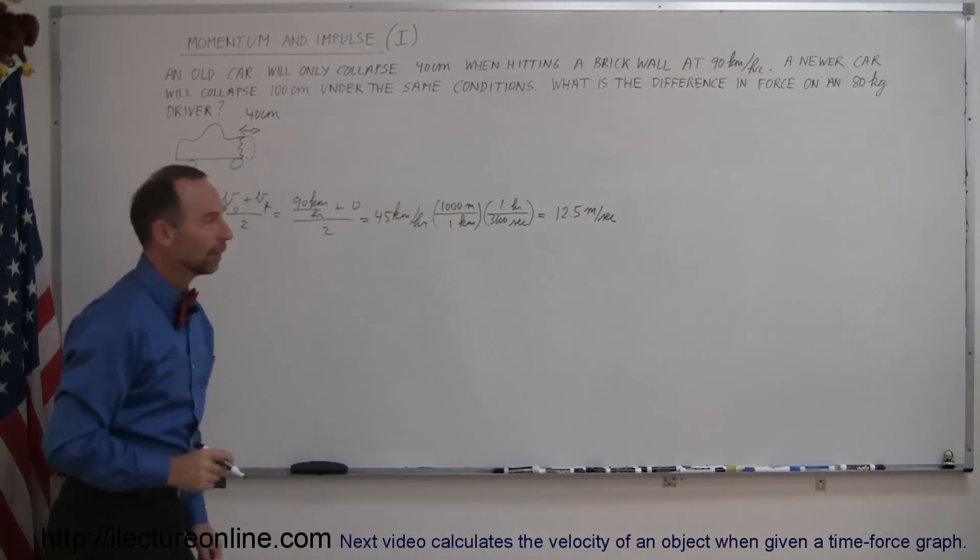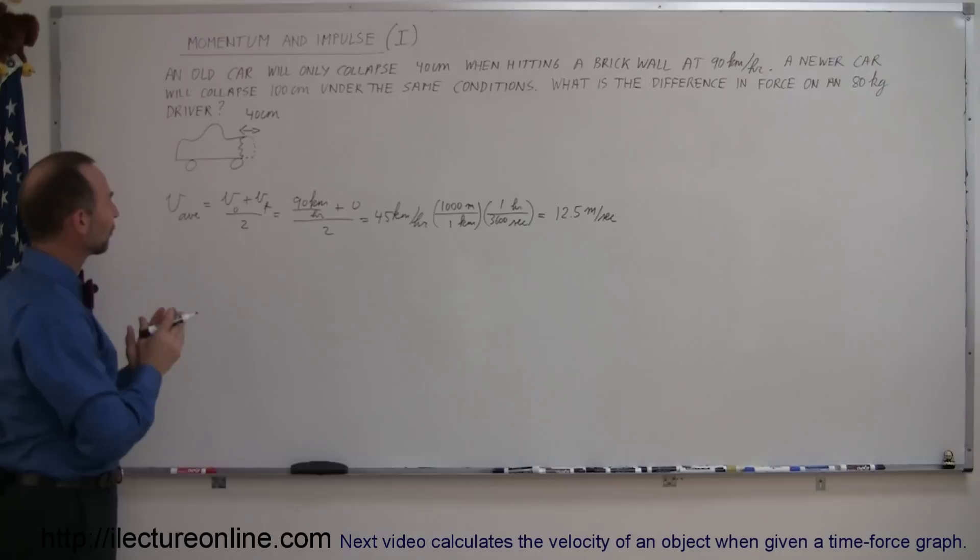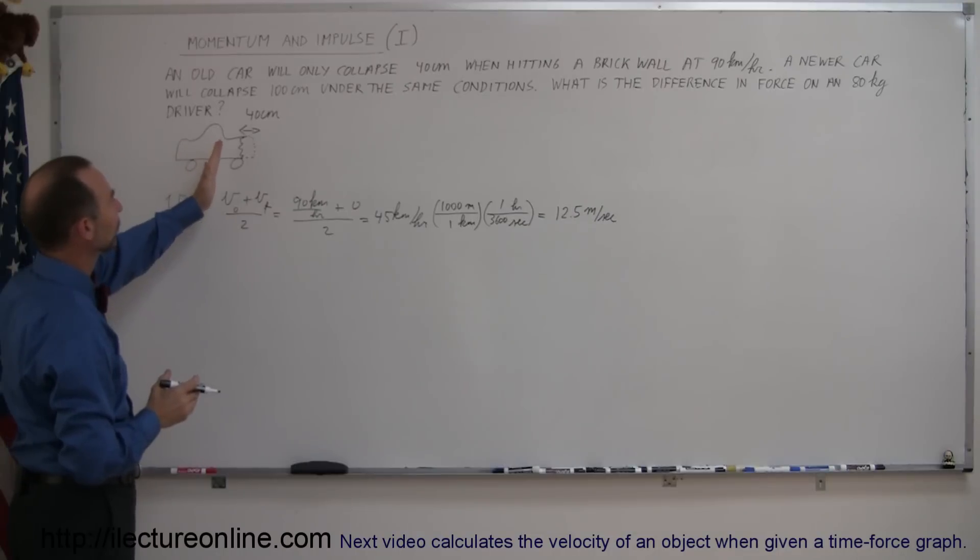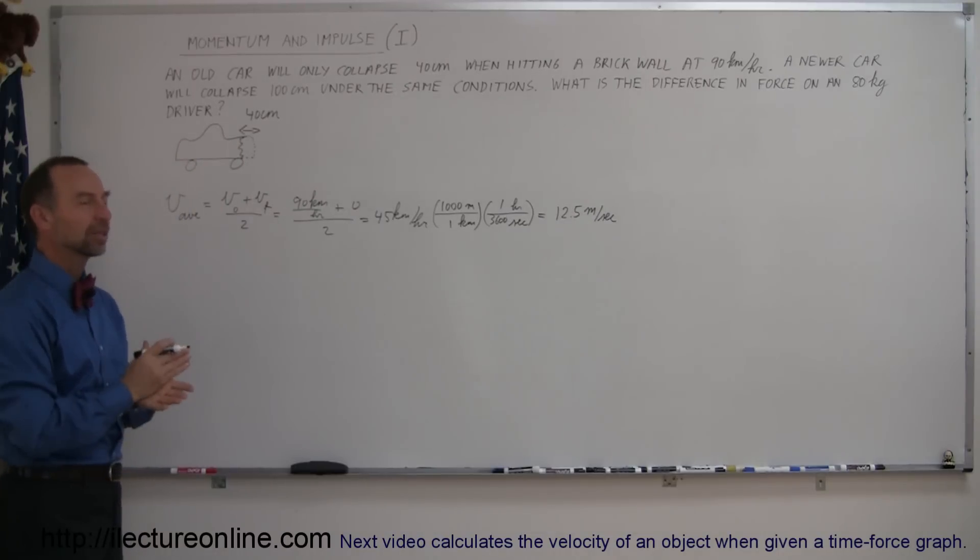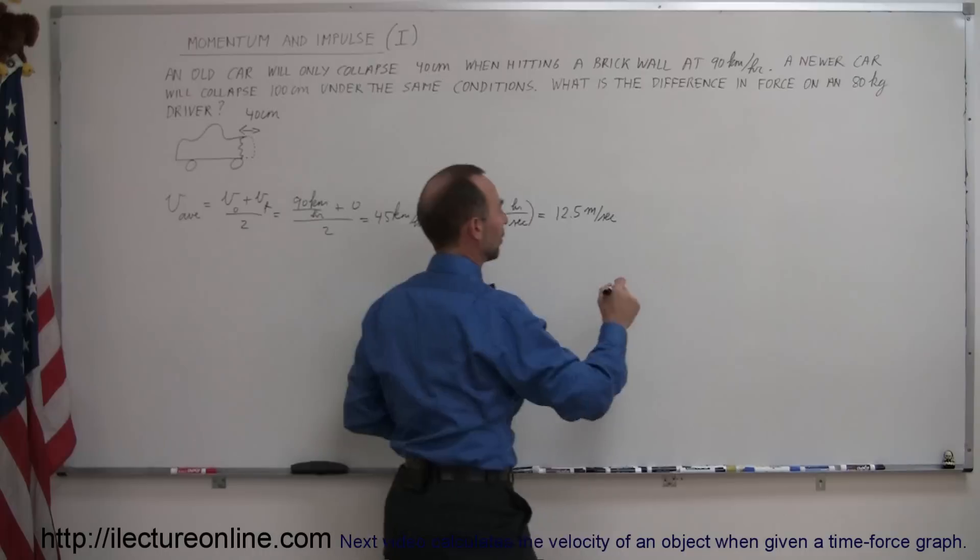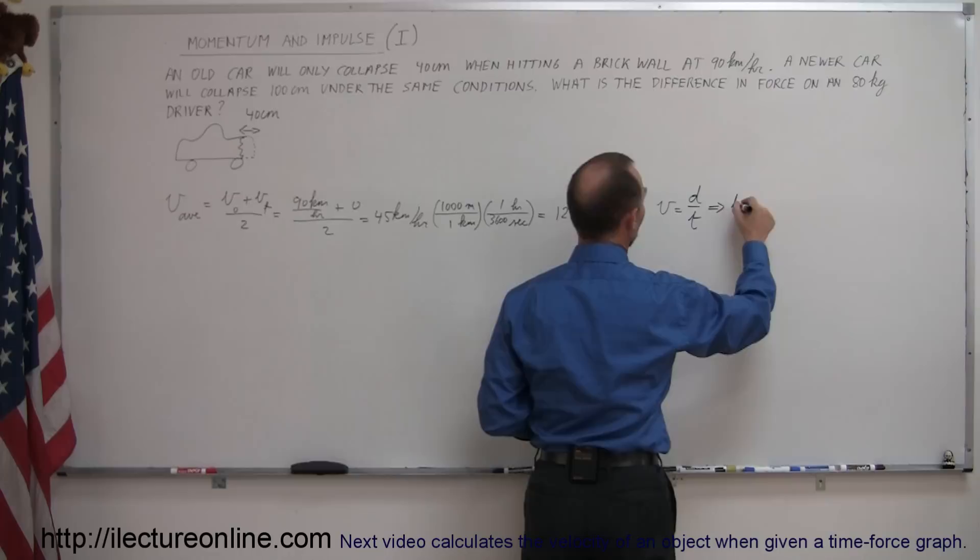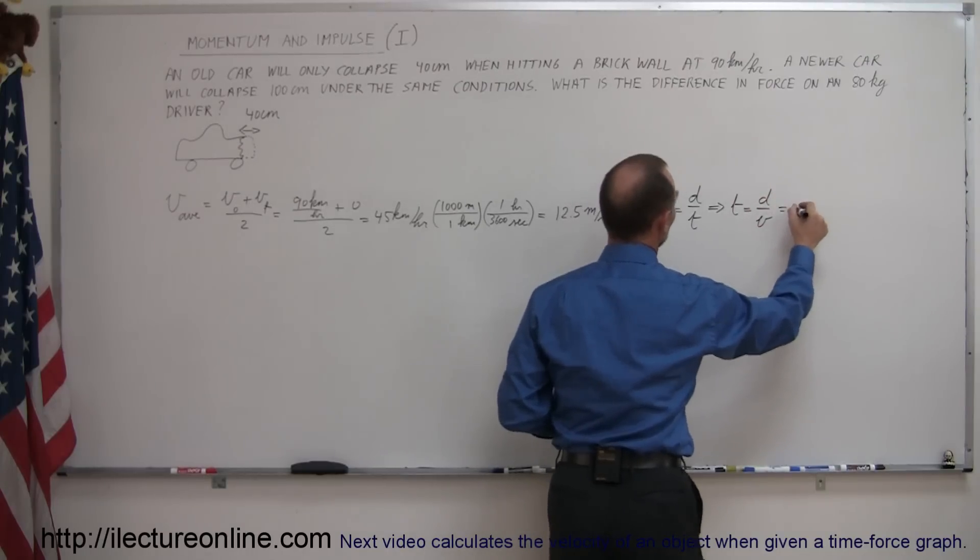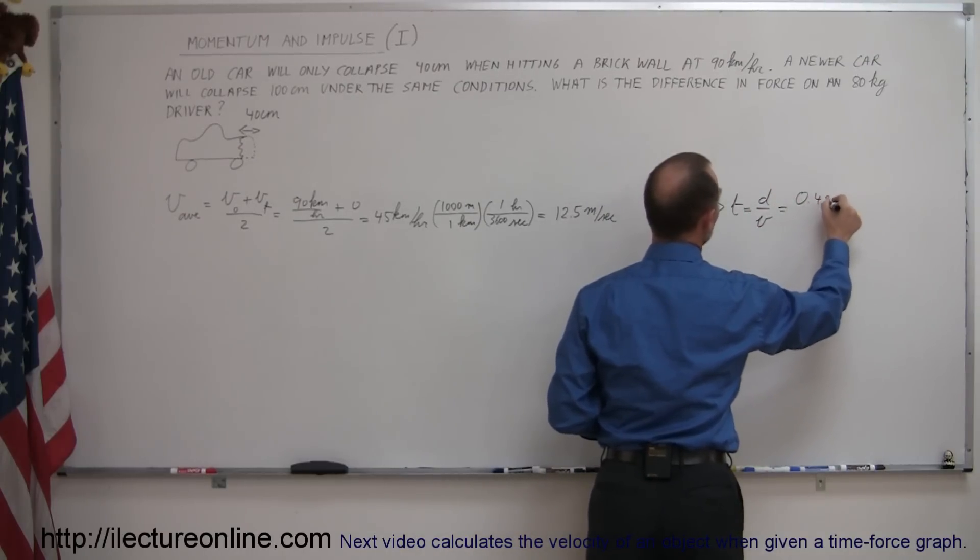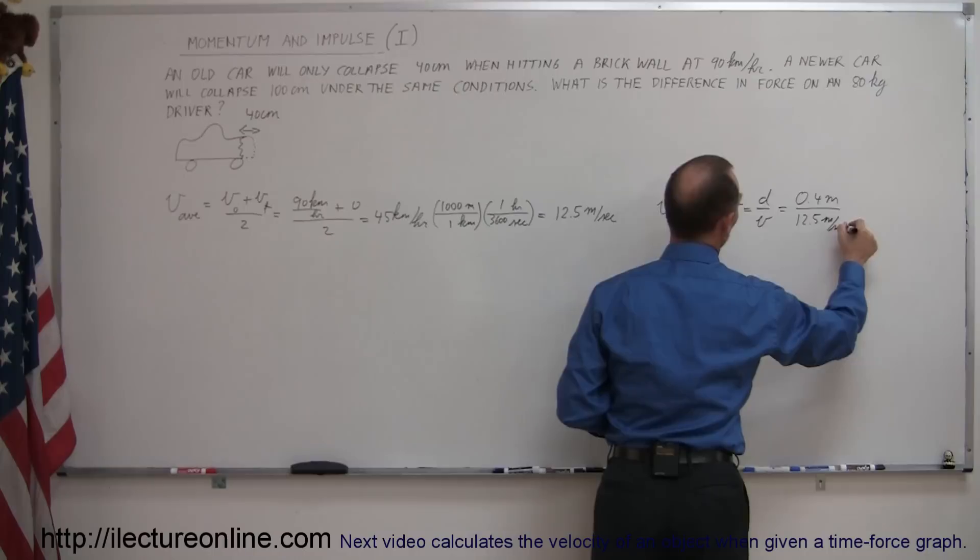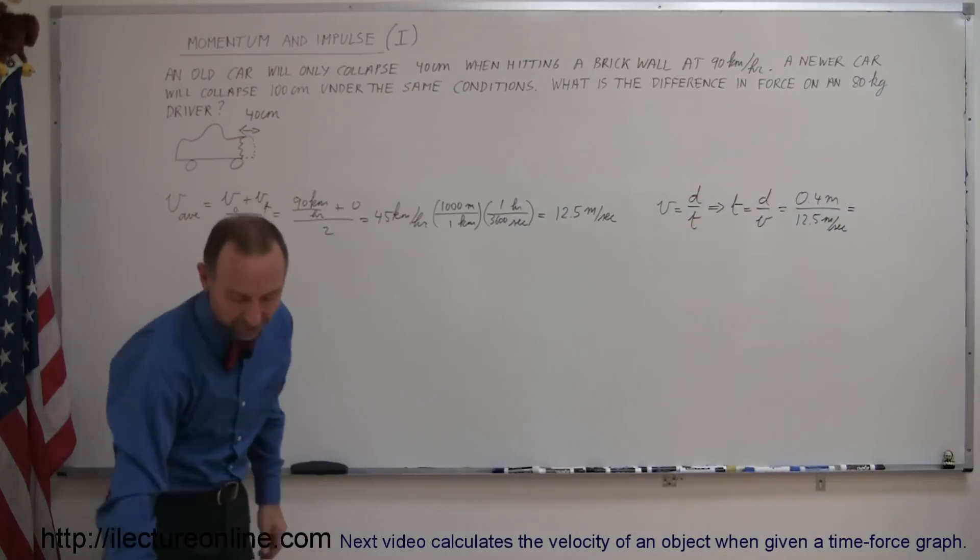So the average velocity during the impact is 12.5 meters per second. And if the driver covers a distance of 40 centimeters, how long did it take for that collision to actually take place? We could say that velocity is equal to distance over time, which means that time is equal to distance divided by velocity.